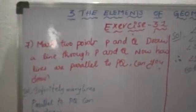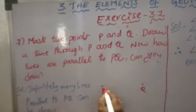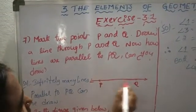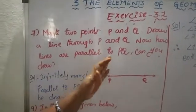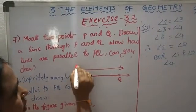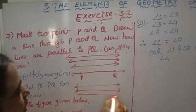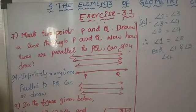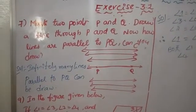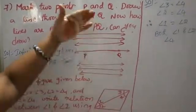The seventh question: mark two points P and Q and draw a line passing through them. How many lines are parallel to PQ can you draw? We can draw one, two, three lines — upside and downside. Infinitely many lines parallel to PQ can be drawn.